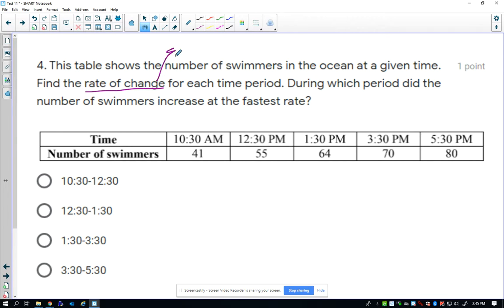Rate of change is a fancy phrase for slope, otherwise known as the change in Y over the change in X, otherwise known as rise over run. Lots of different ways to think of rate of change.